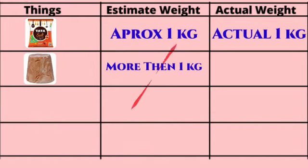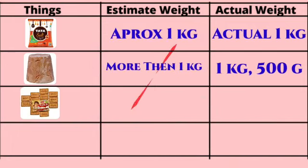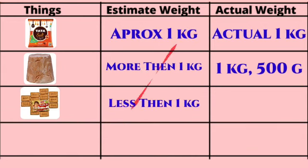Third one, 50 biscuits: the estimated weight is less than one kg, while the actual weight is 500 grams.